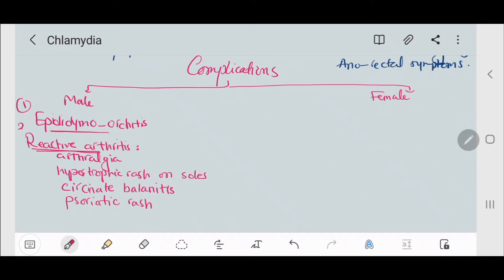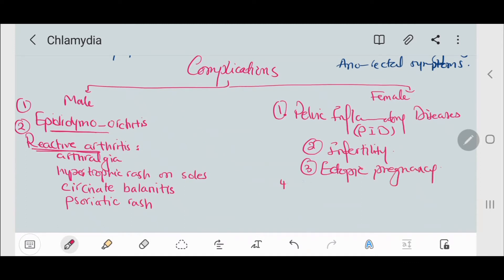In females, they could have pelvic inflammatory disease (PID), infertility, ectopic pregnancy, and reactive arthritis, including arthralgia, hypertrophic rash on soles, and psoriatic rash.